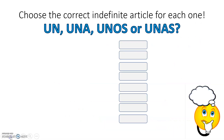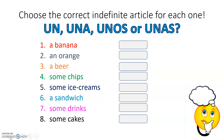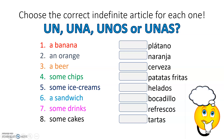Let's see if you can put that into action again. Can you choose the correct indefinite article for each one of these — will it be un, una, unos, or unas? A banana, an orange, a beer, some chips, some ice creams, a sandwich, some drinks, and some cakes. If you're unfamiliar with the Spanish nouns for those items, here they are. Remember to study the ending of those nouns to help you decide whether they're masculine, feminine, masculine plural, or feminine plural. You might want to pause the video here.